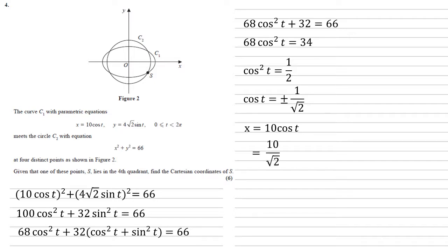So x equals 10 cos t, which equals 10 over root 2, which is equal to 5 root 2.